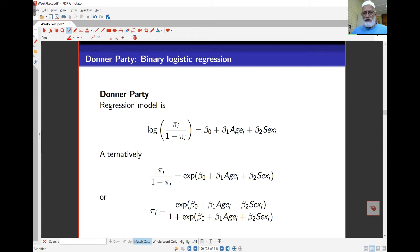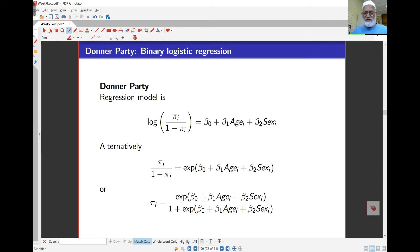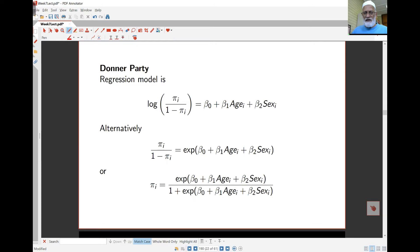If I take exponentials of both sides, I get the odds ratio as pi i over 1 minus pi i is exponential of the right hand side. If I solve for my pi i, I get pi i is the exponential of the regression equation over 1 plus the exponential of the regression equation.